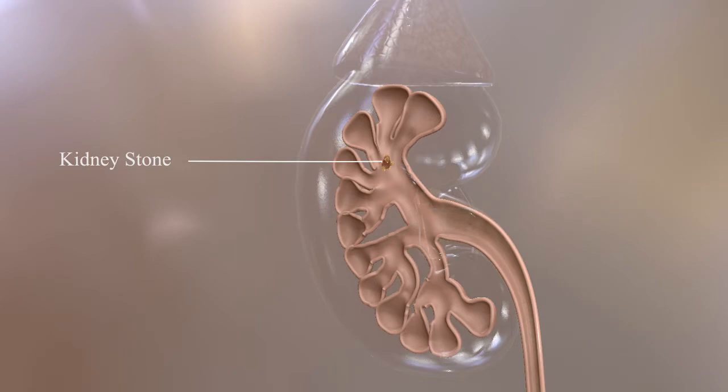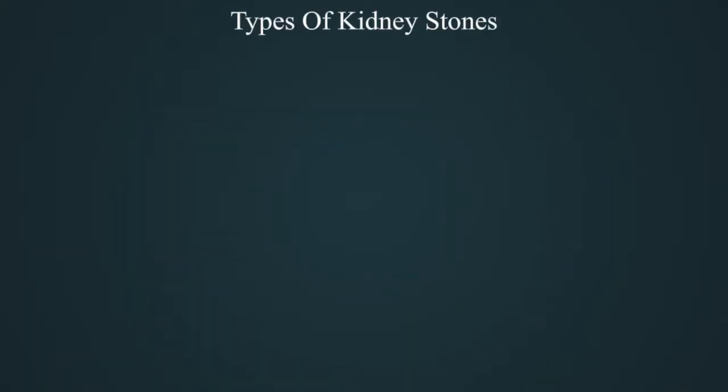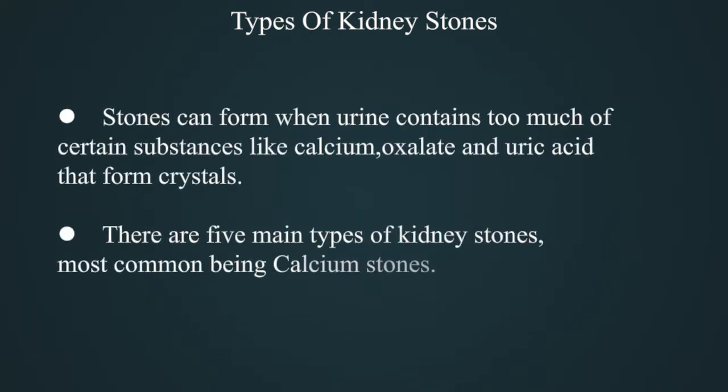Types of kidney stones: Stones can form when urine contains too much of certain substances like calcium, oxalate, and uric acid that form crystals. There are five main types of kidney stones, most common being calcium stones.